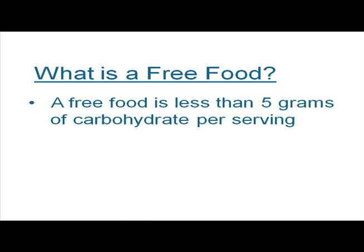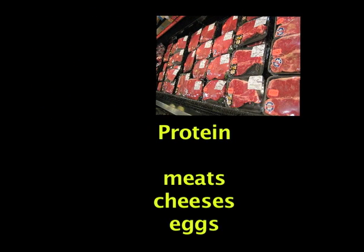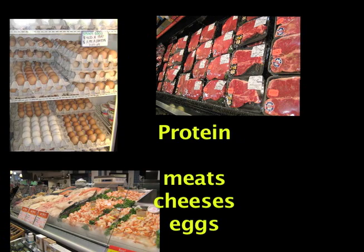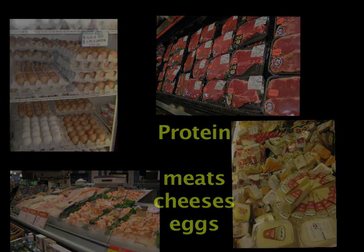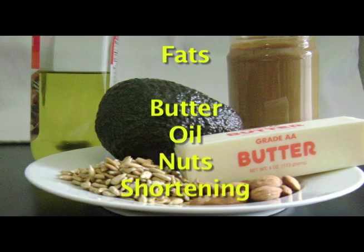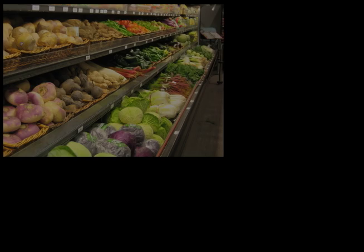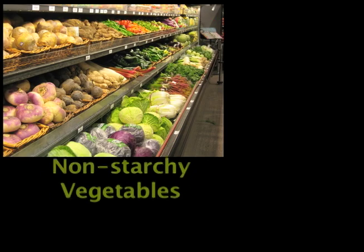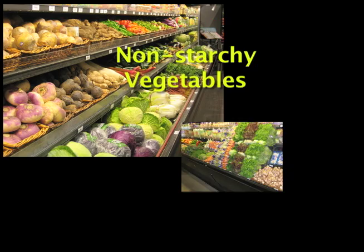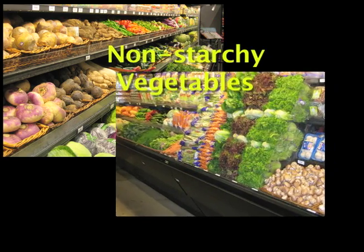The free foods include the protein group, which includes meat, poultry, fish, eggs, and cheeses. The fat group includes butter, oil, nuts, and shortening. Non-starchy vegetables such as carrots, green beans, tomatoes, and broccoli contain very little carbohydrate.